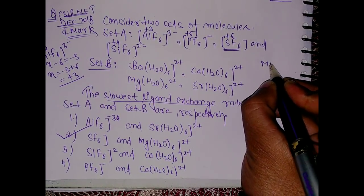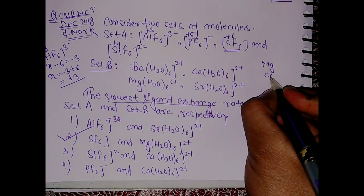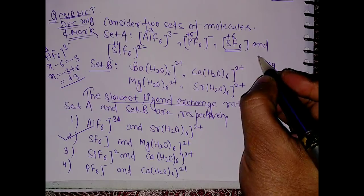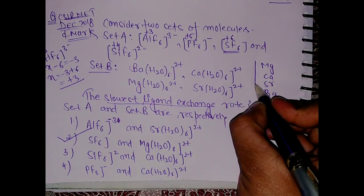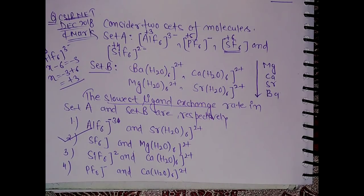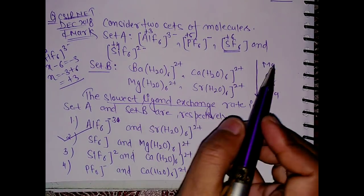Again it is very easy. If you can see here we have first of all in the group we have magnesium, then we have calcium, then we have strontium, then we have barium. So from top to bottom the size of the metal is increasing.